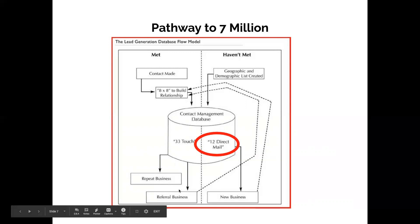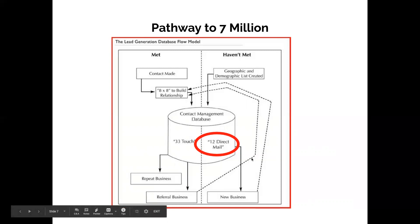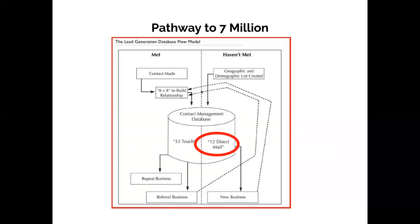So what if someone in your MET database says, 'My sister Nancy is moving to town from Massachusetts — I'd love for you to talk to her'? Nancy's coming out of your MET side, but she's actually a haven't-met person. So you have to follow that line over and build a relationship with Nancy. Hopefully Nancy's buying a house, so you'll have a lot of in-person time. But even if she isn't, she still becomes a MET for you, you put her through the 8x8, and then she winds up in the 33 Touch.